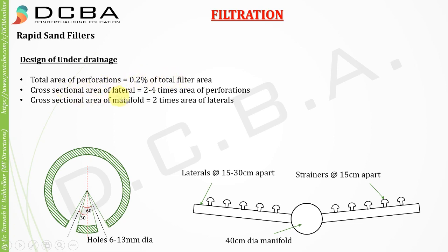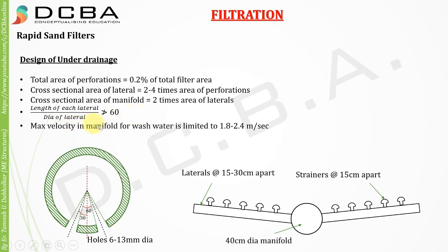The cross-sectional area of laterals is 2 to 4 times the area of perforations. So first you find the area of perforations, then the area of laterals, then the cross-sectional area of the manifold — which is 2 times the area of laterals. One check: the length of each lateral divided by the diameter of the lateral should not exceed 60. Also, the maximum velocity in the manifold for wash water is limited to 1.8 to 2.4 meters per second.